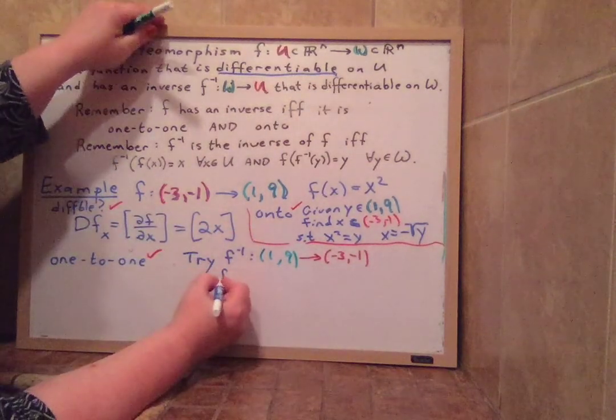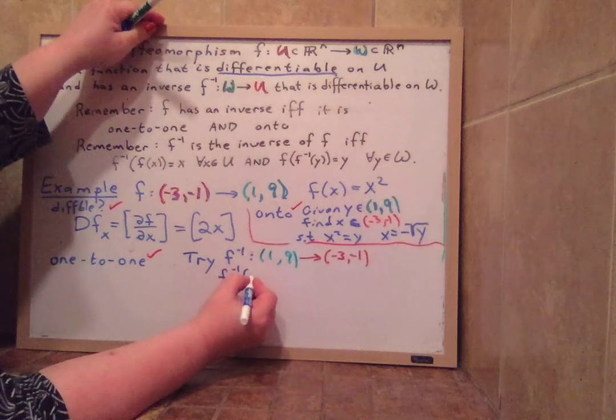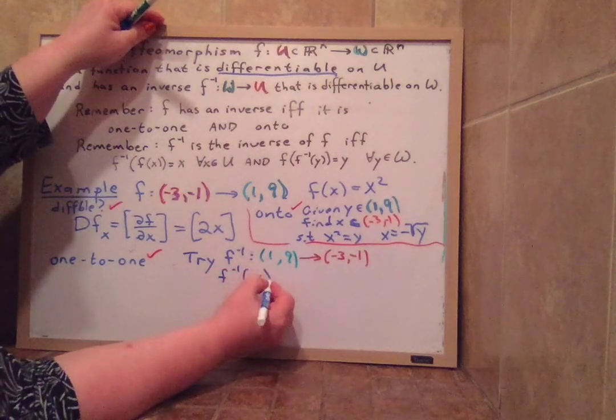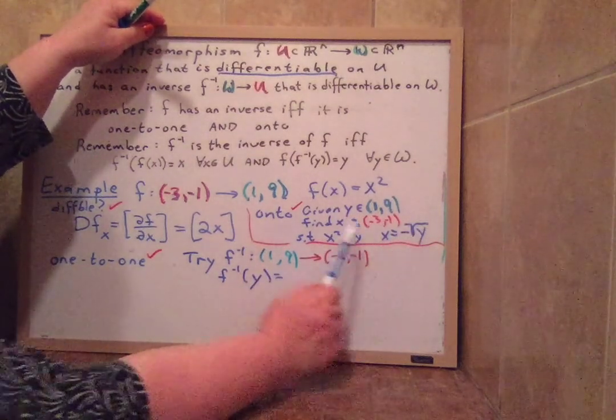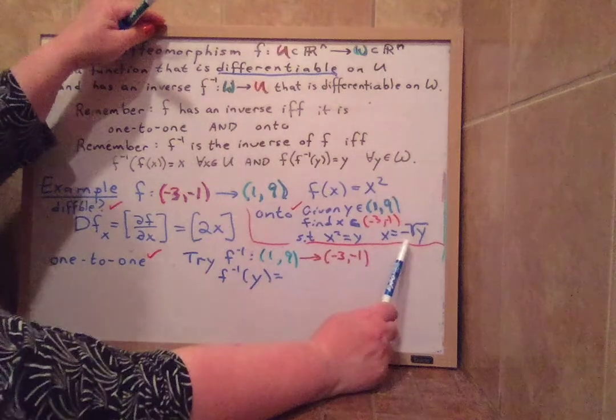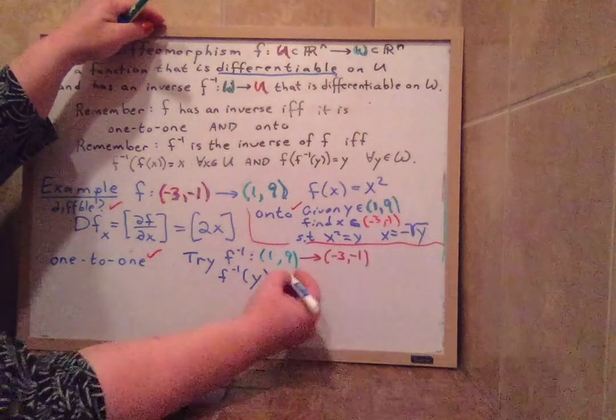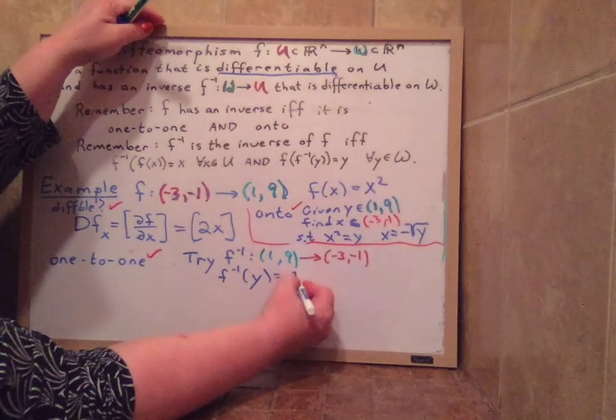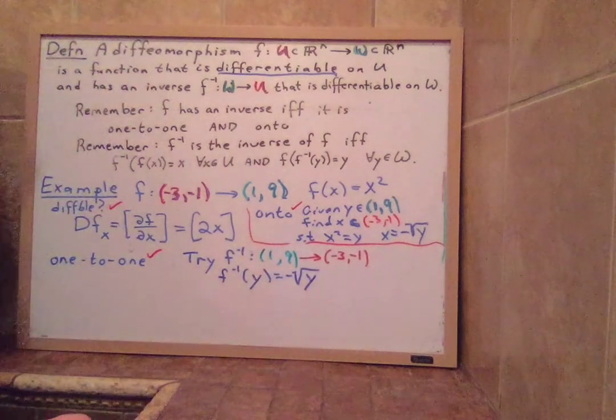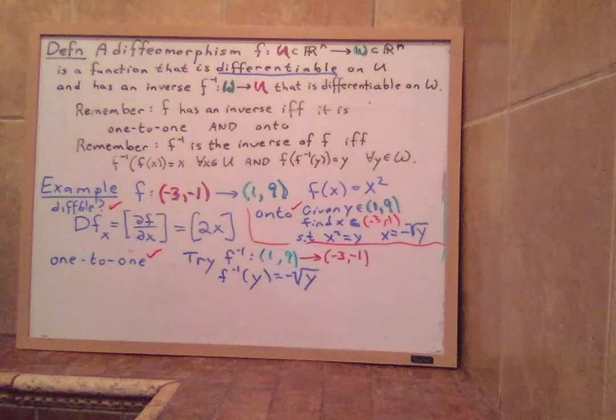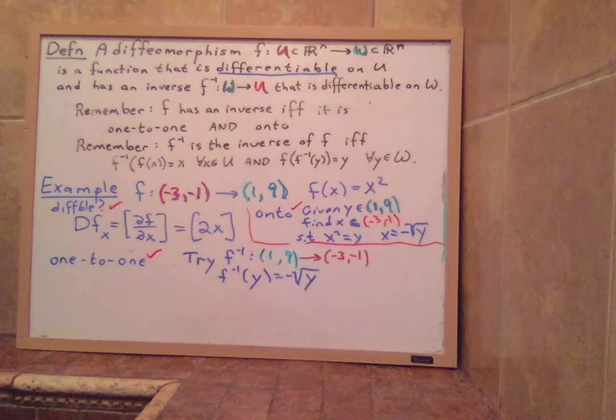And we want to try F inverse to be what should it be? F inverse of an input y should equal, it looks like we should take negative square root of y because the proof of onto where we found an answer, as long as that answer was unique, can be our inverse. So negative square root y. So that's what we're going to check. And then we have to check the two qualities that are needed to verify that something is in fact the inverse.